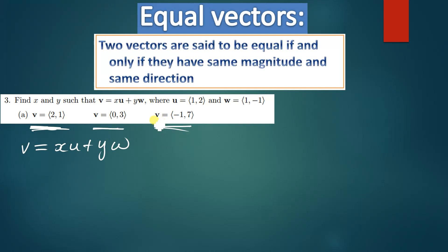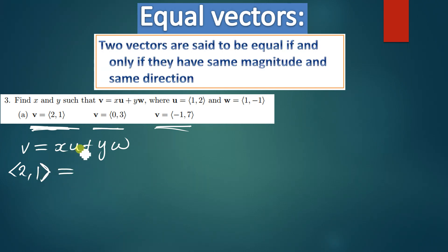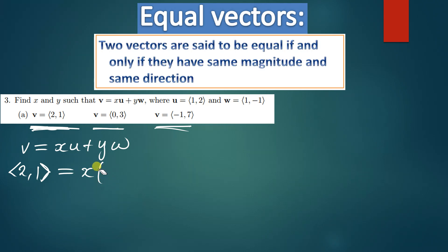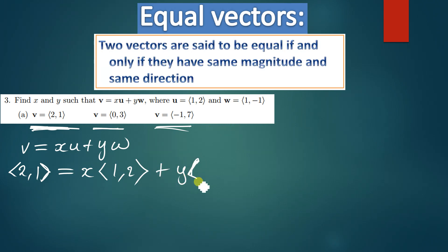Let me use this one as my v. So if my v is (2, 1), this will be equal to x·u plus y·w. u has been given as (1, 2), and w has been given as (1, -1).